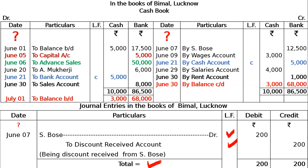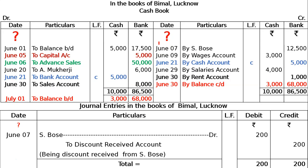Read each question 2-3 times, watch my videos 2-3 times until the concept is clear, then solve it in your register and match it with my videos. I have provided the cash book page for quick revision at the end of this video — you can scroll to see how it is done, compare your answer, and practice. Practice makes a man perfect — this is all about your answer.